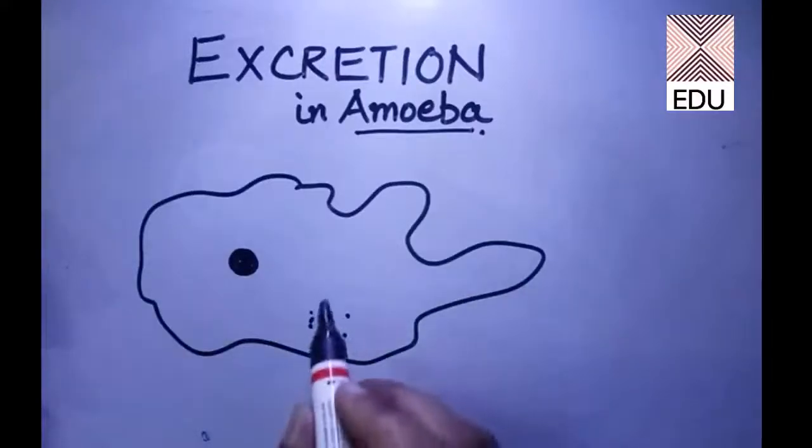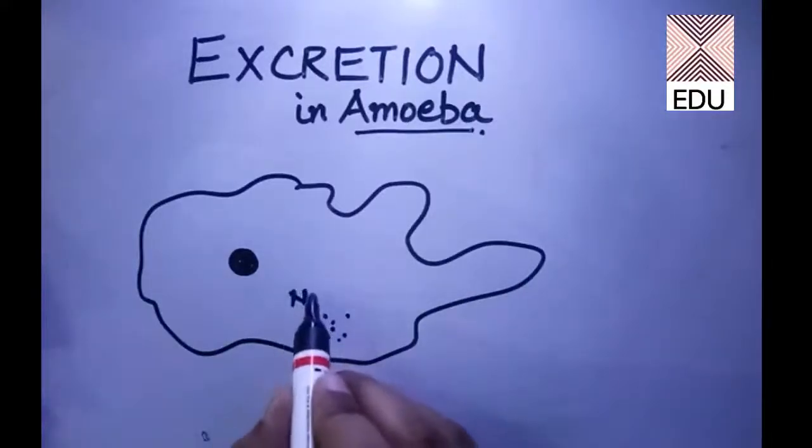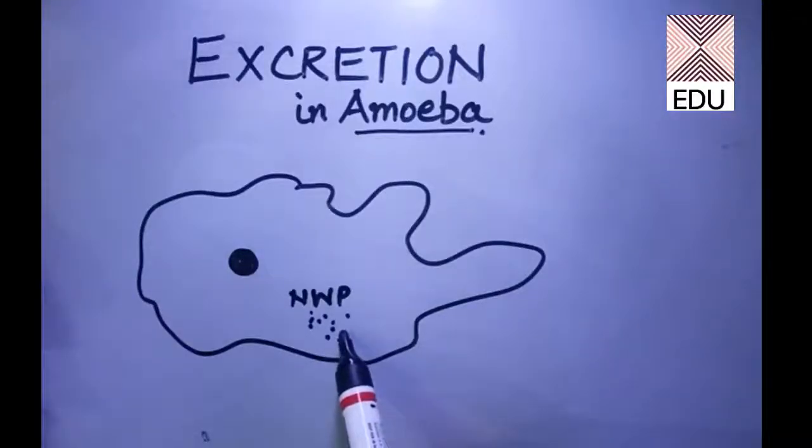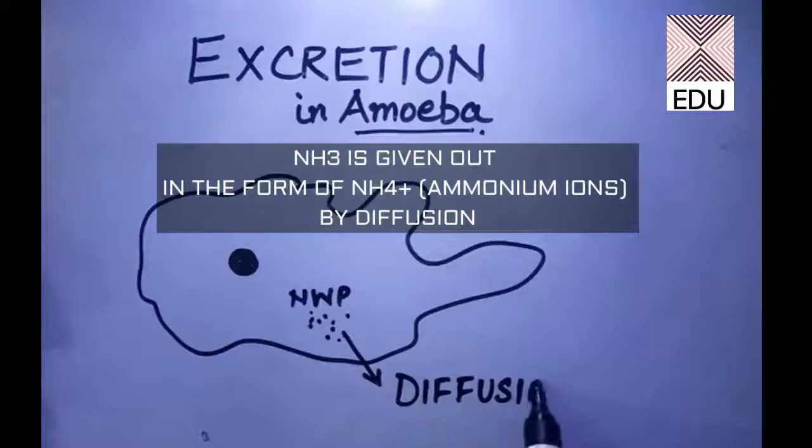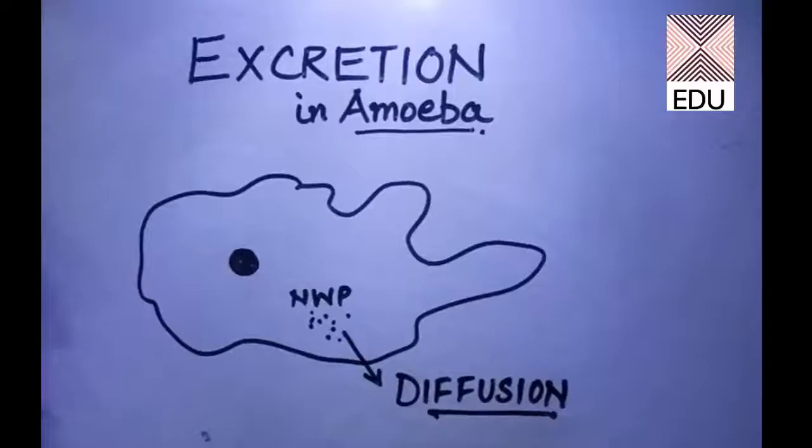The nitrogenous waste products have to be thrown out of the body, so they will be thrown out simply by diffusion, as in the case of respiration. We can say that excretion in amoeba is simply by diffusion.